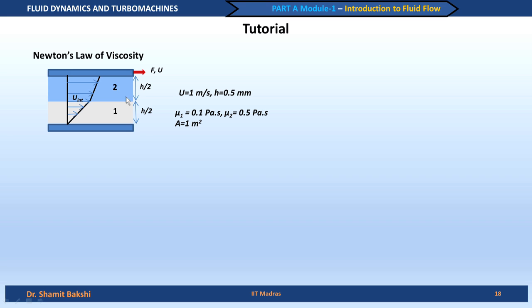The given parameters are: velocity U = 1 meter per second, H = 0.5 millimeter, viscosity of fluid 1 is 0.1 Pascal·second and viscosity of fluid 2 is 0.5 Pascal·second. So the second fluid is more viscous than the first one. The bottom area of the plate is 1 meter squared. We need to find what force is required to move the plate at 1 meter per second.